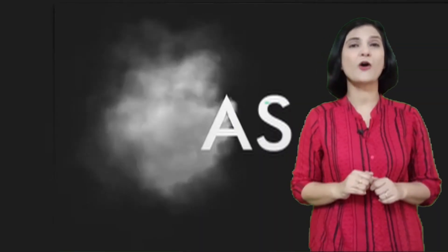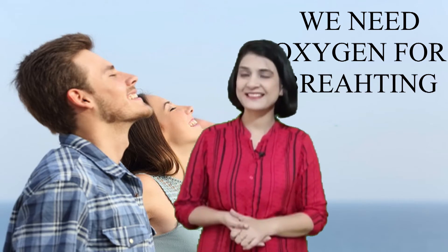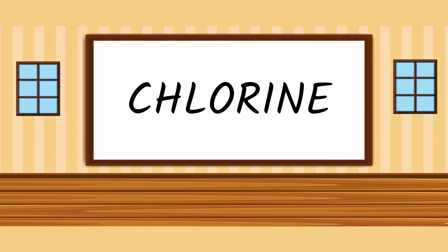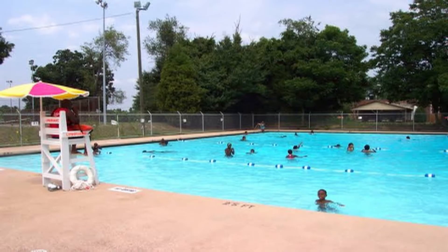After learning about the uses of solids and liquids, let's try to explore how useful gases are. All living things need oxygen to breathe, and plants require carbon dioxide to prepare their food. A gas called CNG is used as fuel in vehicles, and LPG is used for cooking in kitchens. Have you ever heard of a gas called chlorine? It's a gas which is used to keep water clean — you must have smelled it in your swimming pool. And helium is used in balloons.